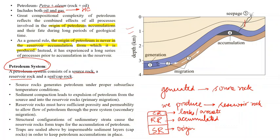Since petroleum is a labile substance — not a solid — it can move. So from the source rock, the petroleum moves to another rock where migration occurs. This is called the reservoir rock. Now this process of migration has two types. The first one is called primary migration. Primary migration is the type of migration in which the hydrocarbon goes from source rock to reservoir rock.